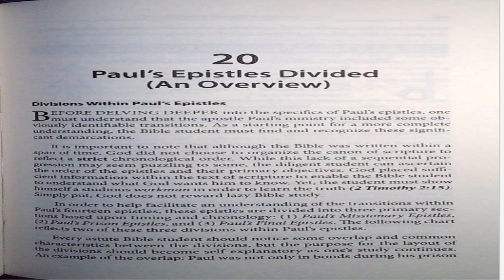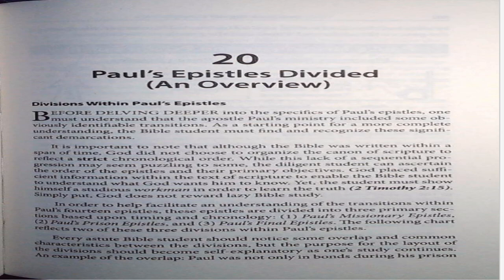Before delving deeper into the specifics of Paul's epistles, one must understand that the Apostle Paul's ministry included some obviously identifiable transitions. As a starting point for a more complete understanding, the Bible student must find and recognize these significant demarcations. It is important to note that although the Bible was written within a span of time, God did not choose to organize the canon of Scripture to reflect a strict chronological order.